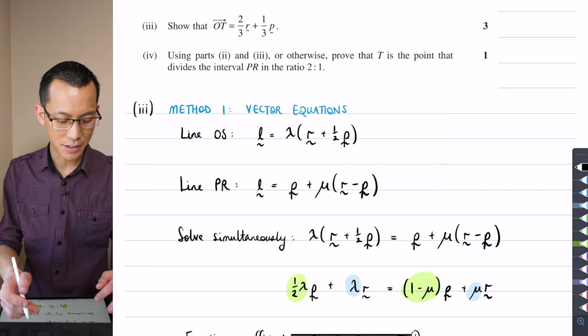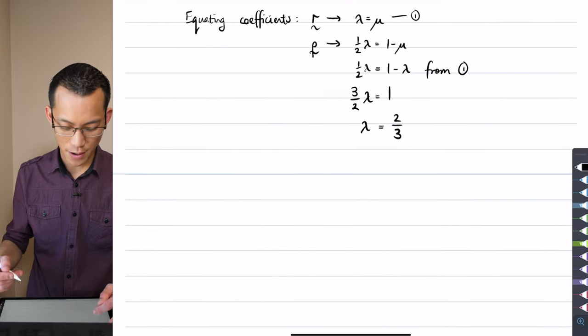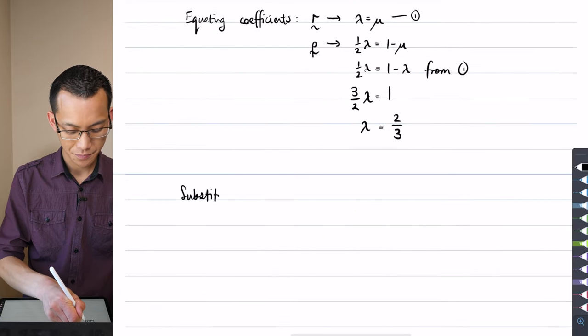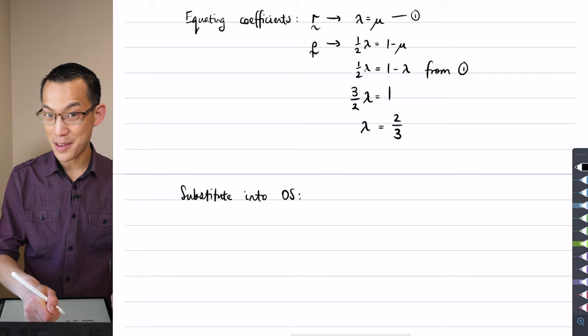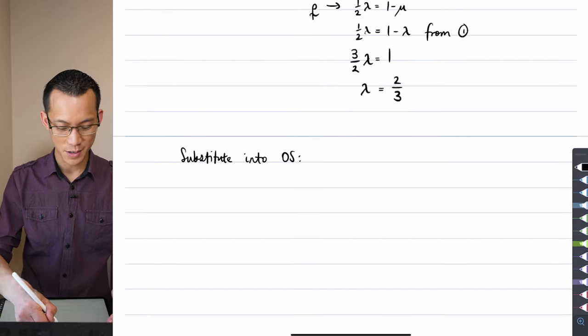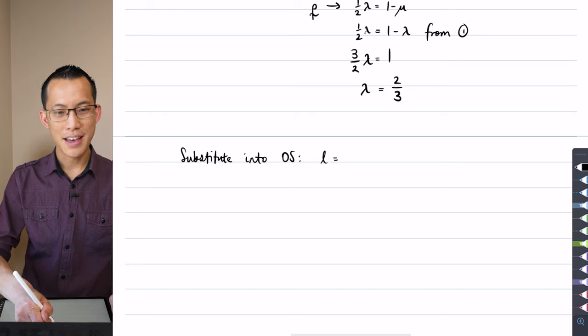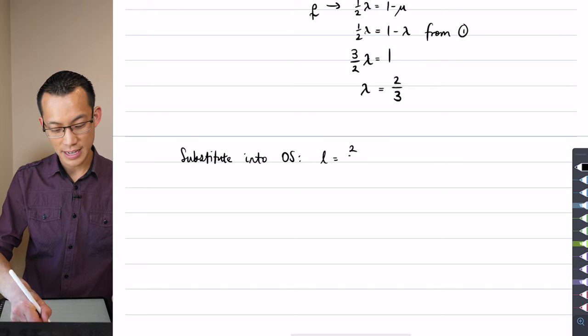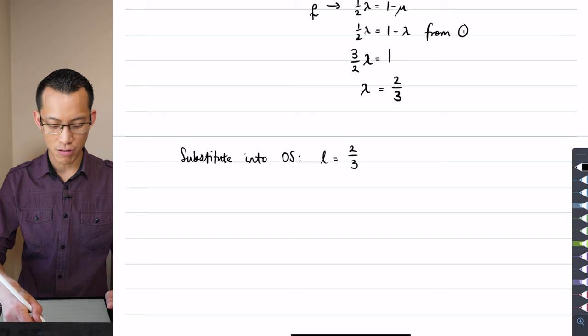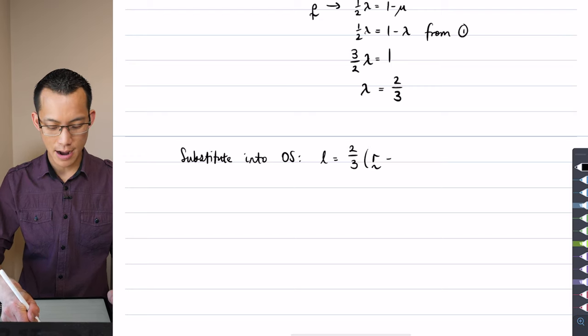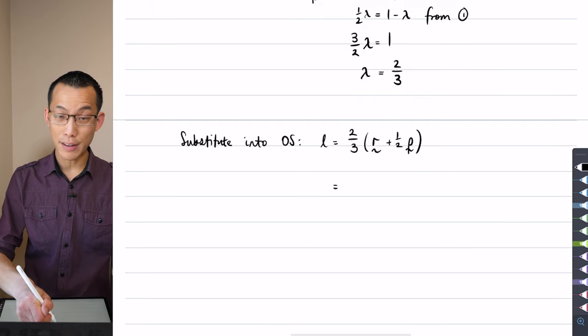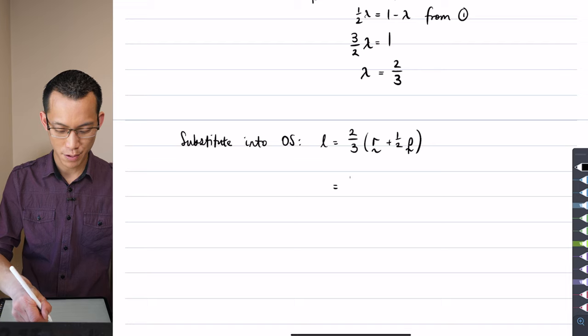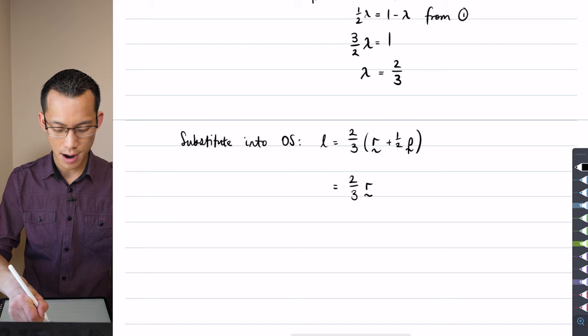But let's put it into—let's substitute it into line OS. Substitute into OS, and this should hopefully give me the result I was going for. So it's going to be L equals—here comes the particular lambda that I found, two-thirds—and I'm multiplying by r plus half p from memory. And then you can see, if you just cast one eye towards the result you're trying to prove, that is the two-thirds r plus one-third p that they were after. So I'm just going to conclude that with 'as required.'